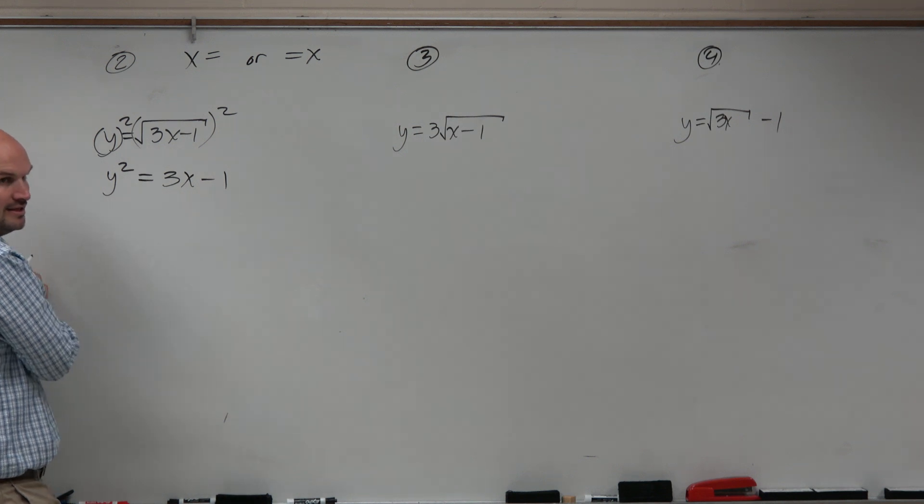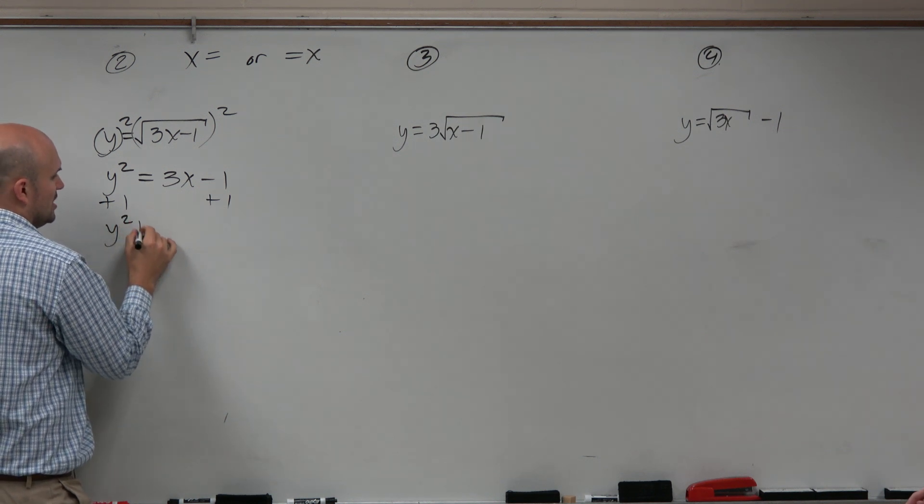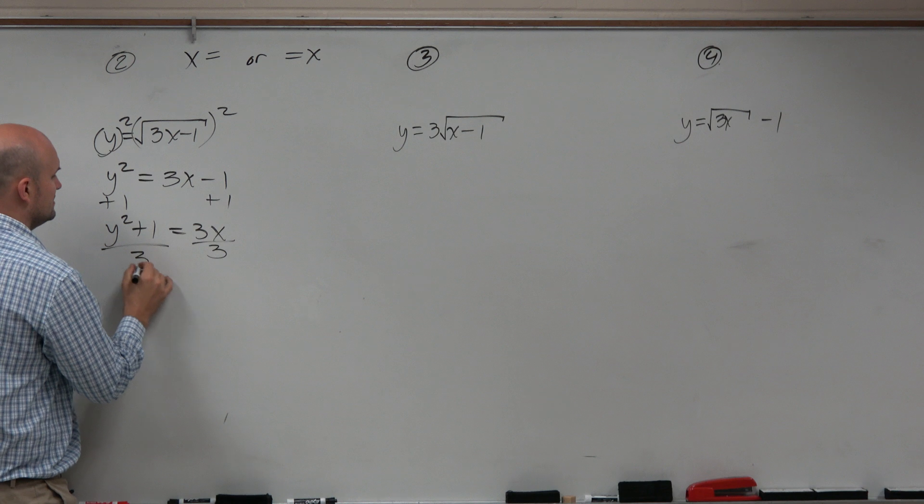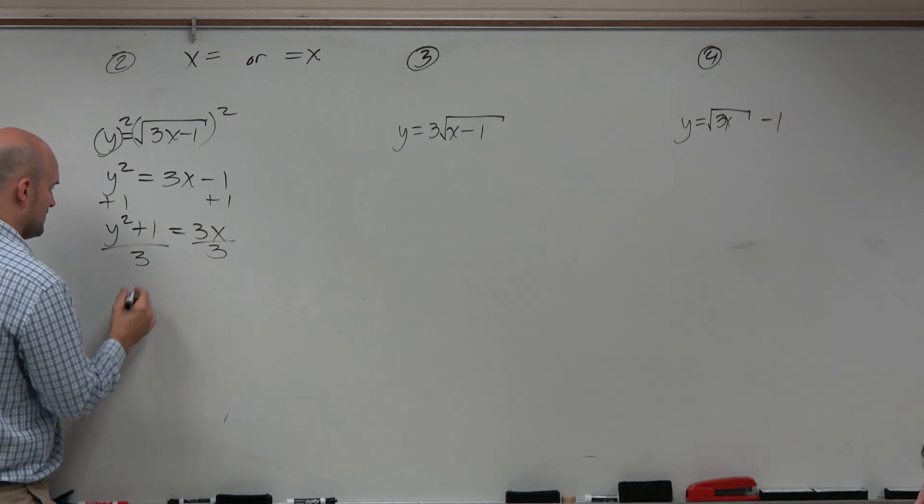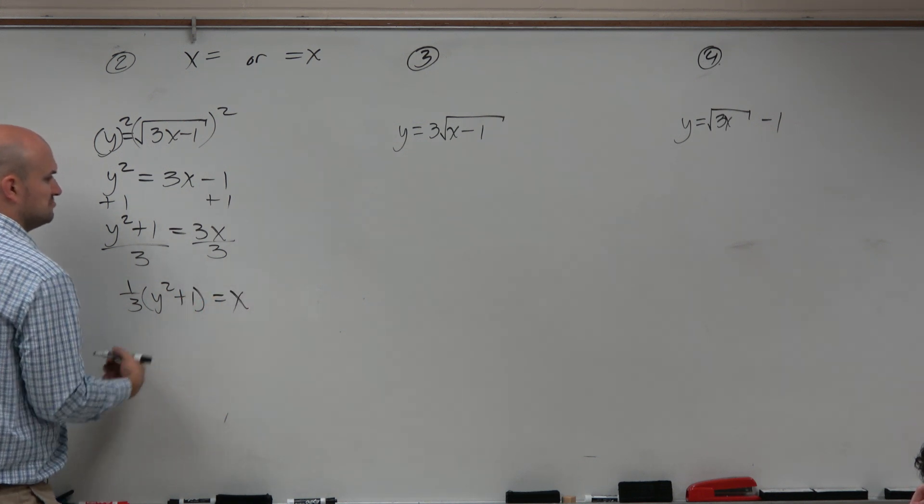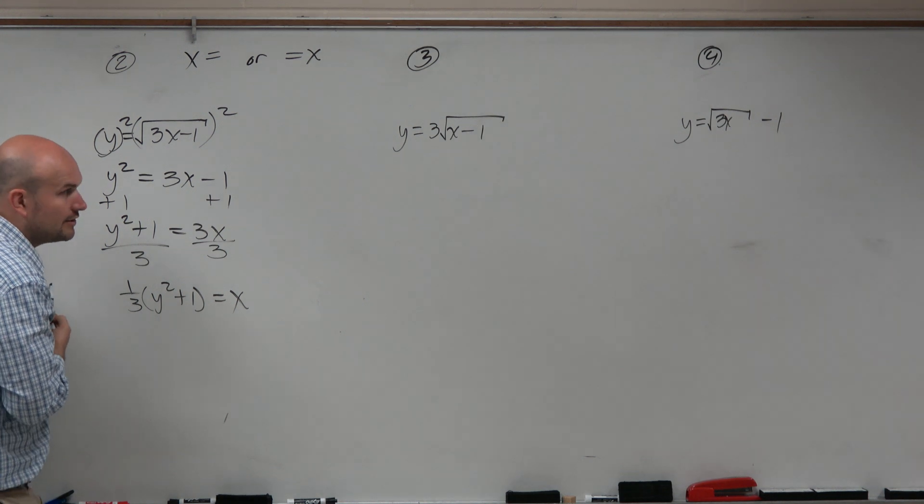Now I can use my inverse operations, reverse order of operations, and so on. Therefore, I get y squared plus 1 is equal to 3x. Divide by 3, divide by 3. And then I can write this as 1 third y squared plus 1 equals x, or any way you want. You can just leave it just like that, however you want to do it.